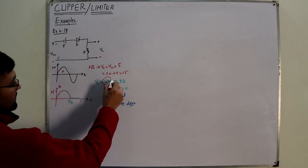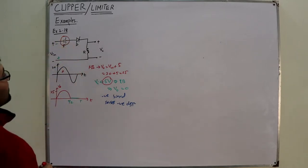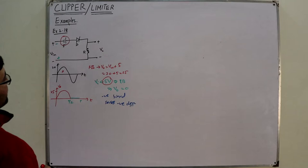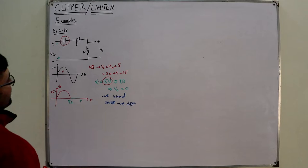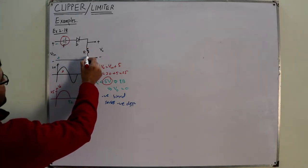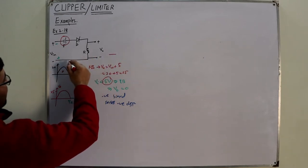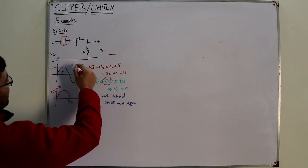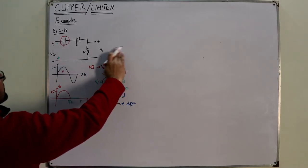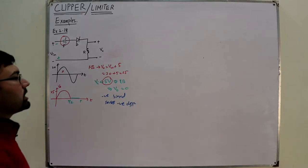Over here we also have a negative sign, and when you consider this polarity with the standard, it is a negative biased clipper, because you have to connect the P-side over here. So I believe this is a negative biased circuit — you can check it with the standard and let me know in the comments.